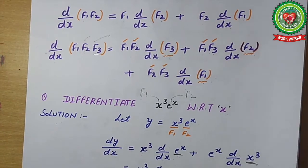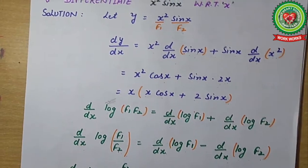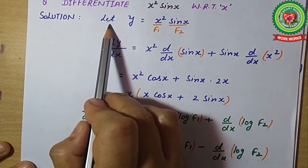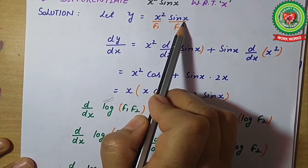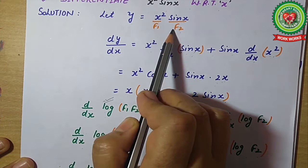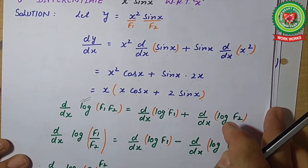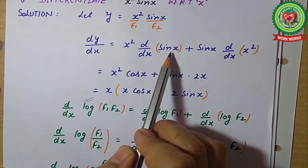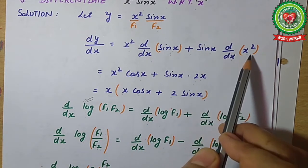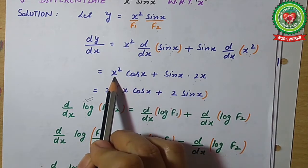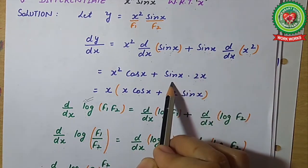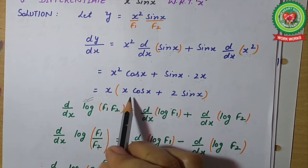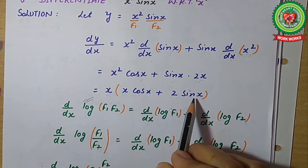Let's take one more example: differentiate x²·sinx with respect to x. Let y = x²·sinx. Again, two functions f1 and f2. Applying the product formula: dy/dx = x²·ddx(sinx) + sinx·ddx(x²). ddx of sinx is cosx, and ddx of x² is 2x. Taking x as common factor, the answer is x(x·cosx + sinx).